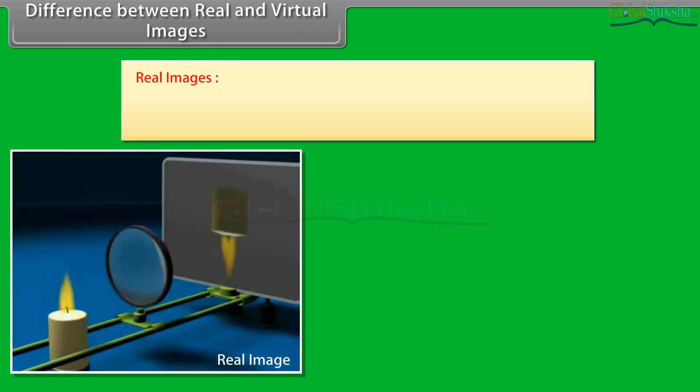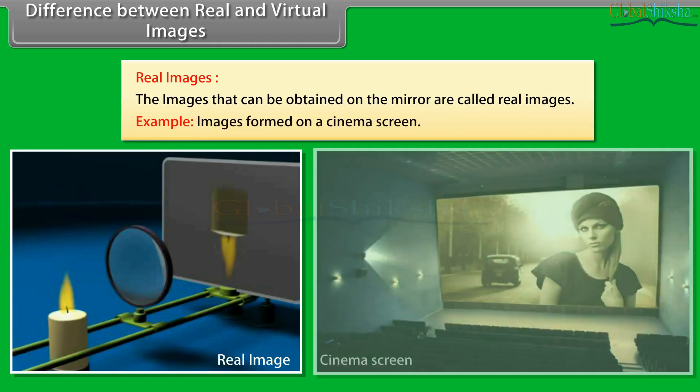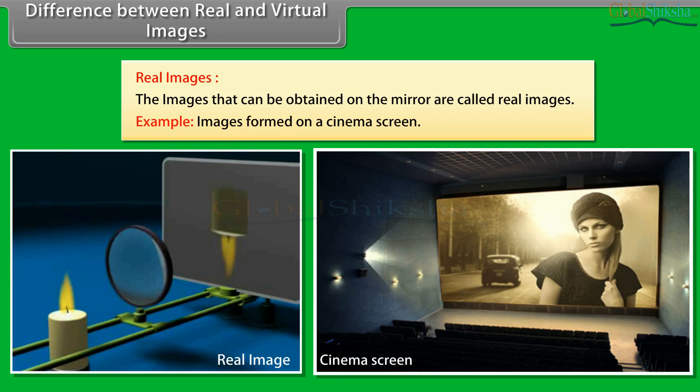Difference between real and virtual images. Real images: The images that can be obtained on a screen are called real images. Example: Images formed on a cinema screen. It is formed by a concave mirror.